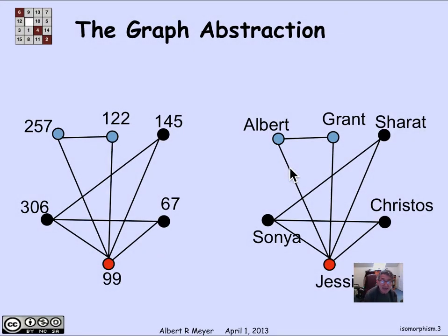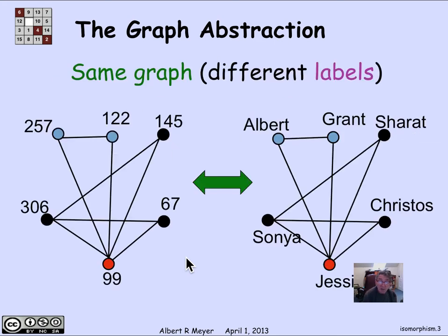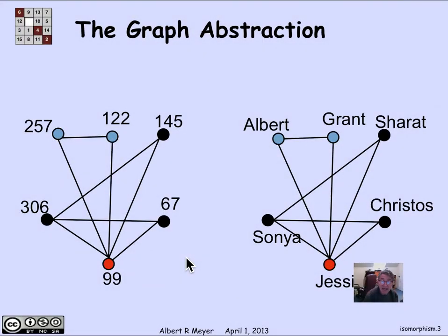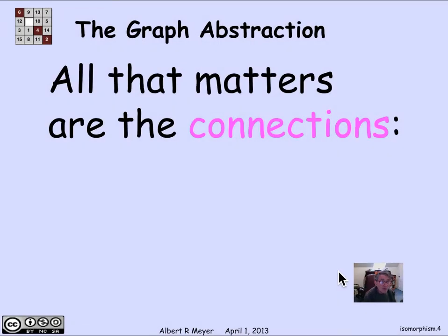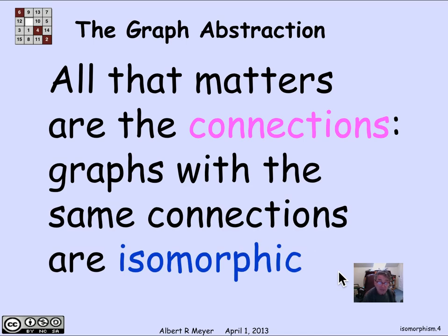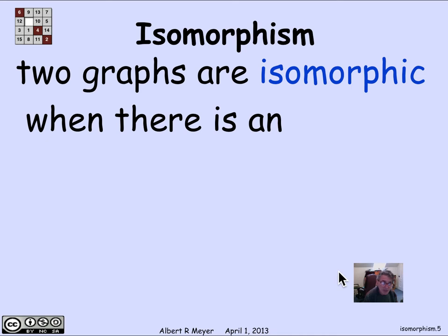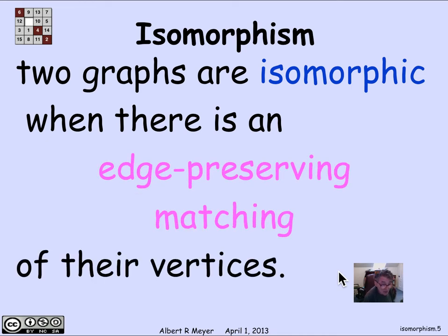Here's a case where it's really the same layout. These two pictures, if you ignore the labels, are exactly the same. But the difference is that the vertices have been renamed — assigned different labels. The connection between the two graphs, one with integer vertices and one with people's names as vertices, is that they are isomorphic. Isomorphism means that all that matters between two graphs are their connections. Two graphs are isomorphic when there's an edge-preserving bijection between their vertices — where there's an edge on one side, there's an edge between the corresponding vertices on the other side.